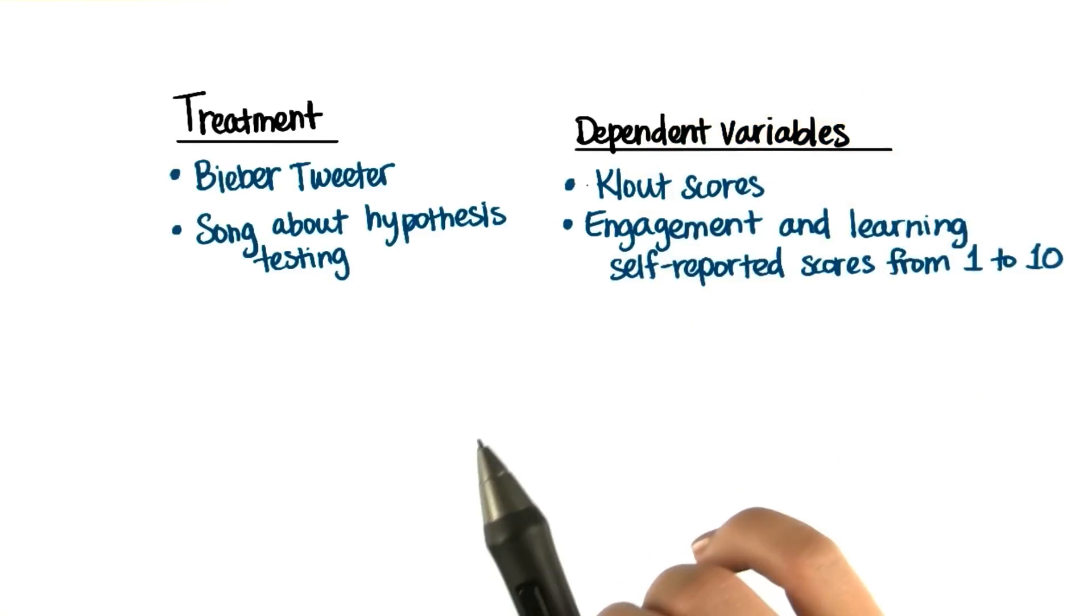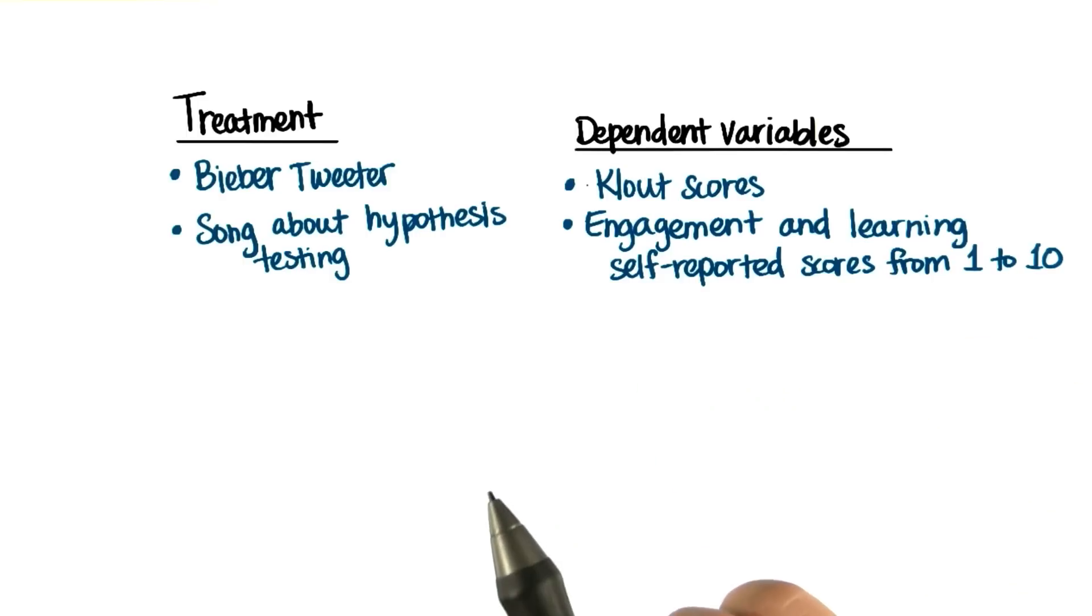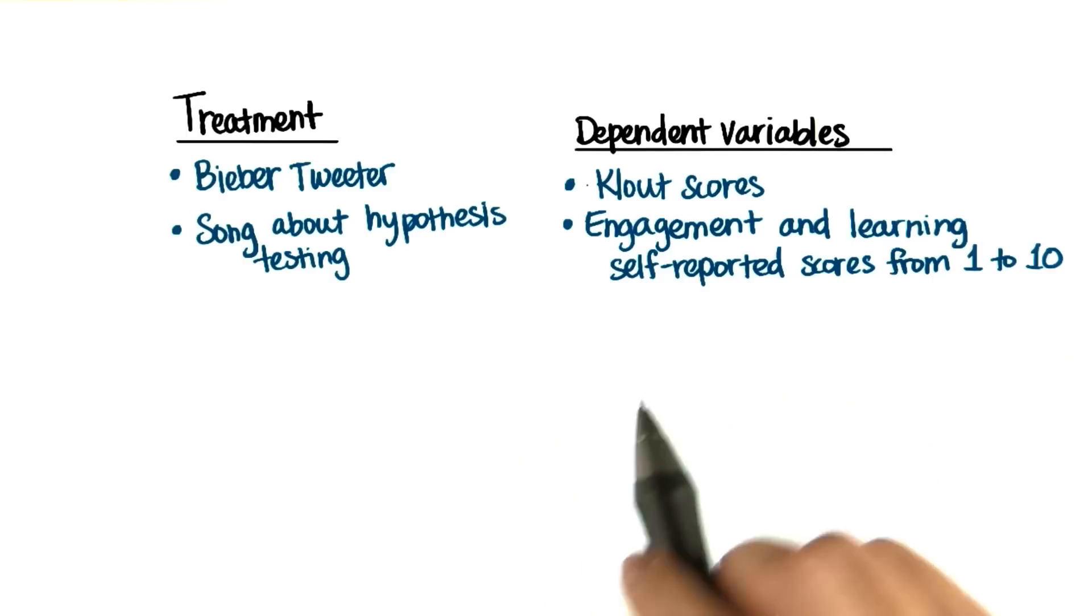In the next lesson, you'll learn how to formalize the procedure of deciding whether or not the sample receiving treatment had likely or unlikely statistics.